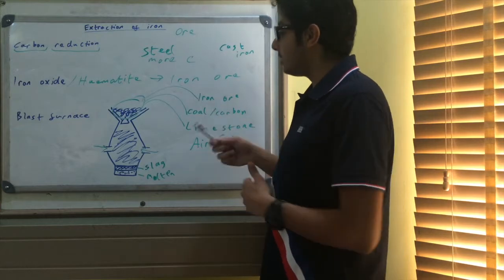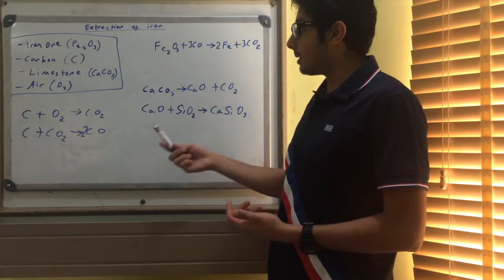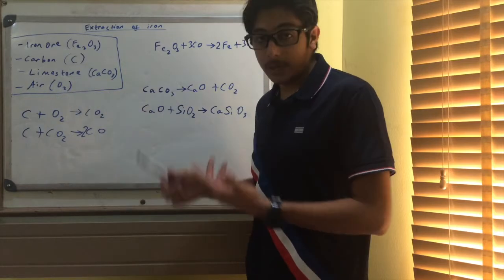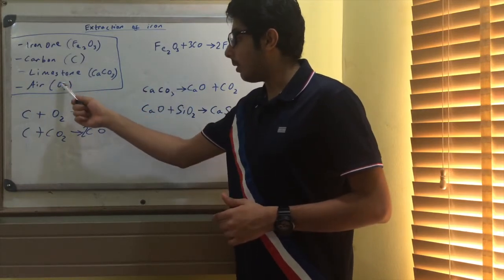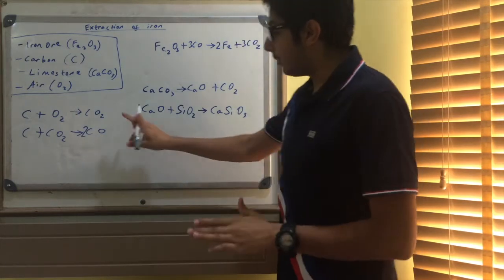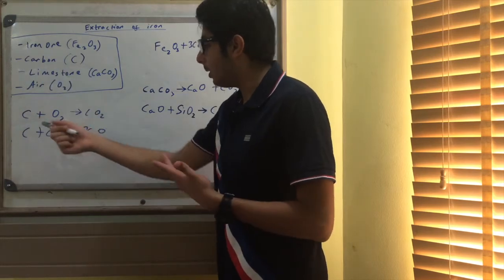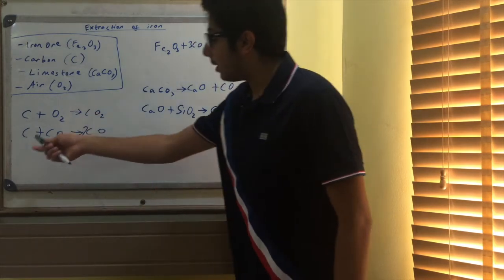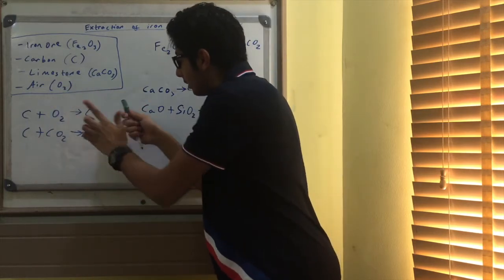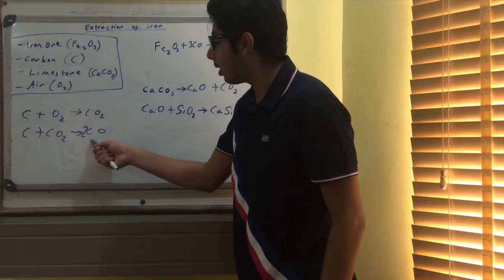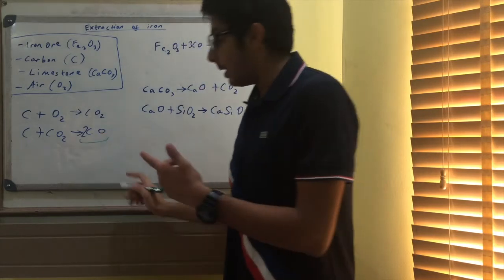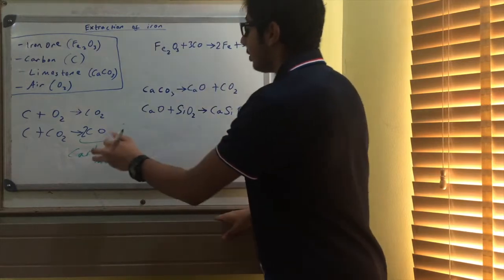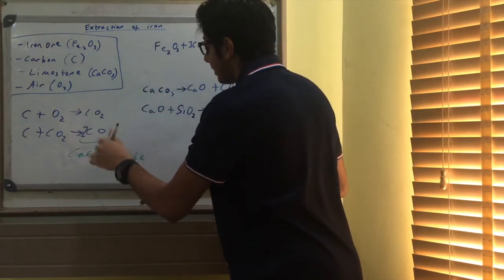The four things added to the blast furnace are: iron ore (iron oxide), carbon, limestone (mainly calcium carbonate), and oxygen from the air. First, carbon reacts with oxygen from the air to give carbon dioxide. Then carbon reacts again with that carbon dioxide to give carbon monoxide. This carbon monoxide is very important in the extraction of iron.